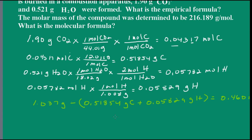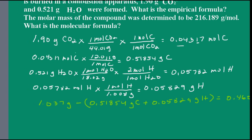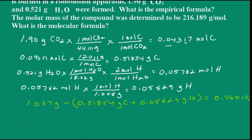Now we can determine the number of moles of oxygen. Remember, we need the moles of carbon, hydrogen, and oxygen for the empirical formula. We have 0.46017 grams of oxygen; we'll convert that to moles. One mole of oxygen is 16 grams, and we end up with 0.02876 moles of oxygen.